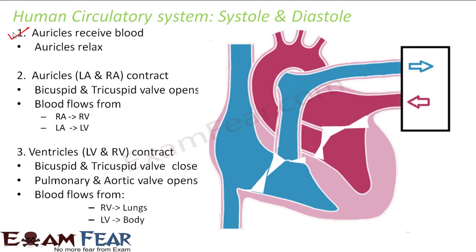Whenever any object receives something, it does not contract. For example, in the case of lungs we saw that when we breathe in, the lungs expand — they do not contract. Similarly, when the auricles receive blood, the auricles will be in a relaxed state, because during receiving blood more space is needed by the incoming blood. So the auricles relax.